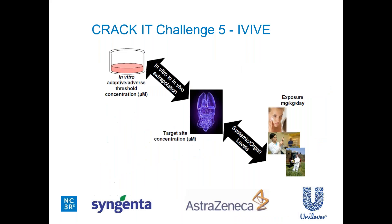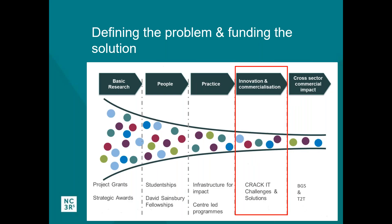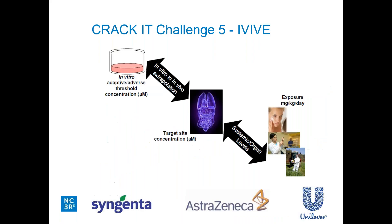For the last few slides I'm going to highlight a few examples from the NC3Rs — firstly looking at how we define problems and fund solutions. The Crackit Challenges open innovation platform is a milestone-driven research funding competition where we work with large companies to define their business problems involving animal use and affecting product development. We then pitch those challenges as a problem statement to the academic and small company sector to see if they can come up with relevant solutions, which we then fund — up to the region of a million pounds per challenge.